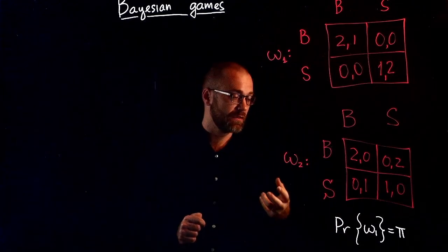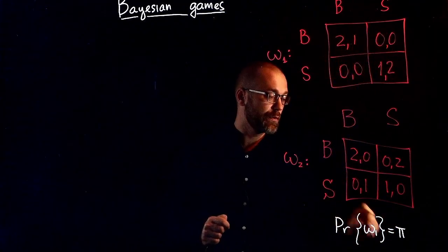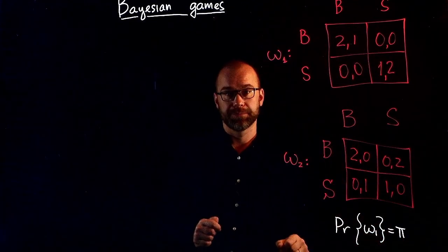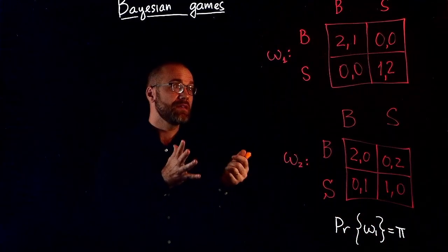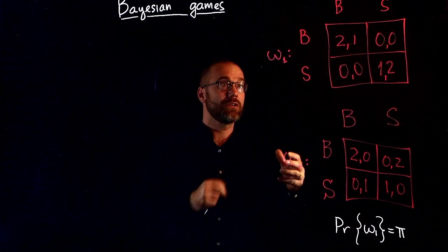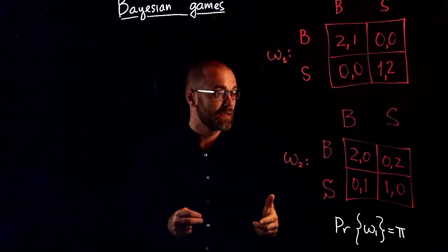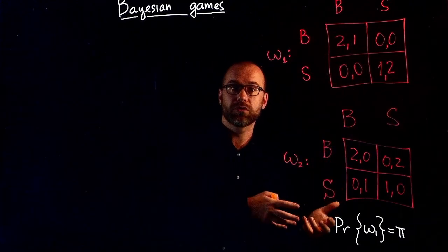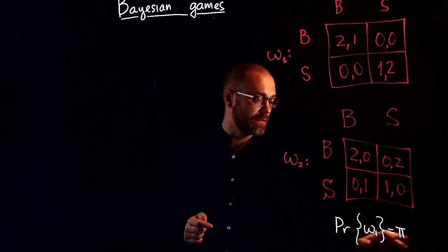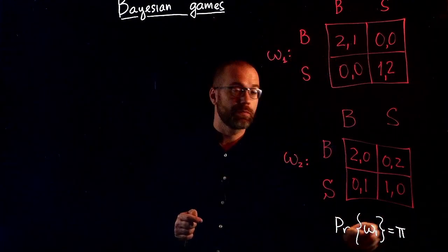We're going to quantify this uncertainty. We'll assume that player 1 thinks player 2 is of type W1 with probability pi, and of type W2 with probability 1 minus pi. This is exactly the asymmetric information we were asking for: player 1 is not informed about player 2's preferences, but player 2 is informed about his own. Something that player 2 knows is not revealed to player 1, but player 1 has a rough probabilistic idea.